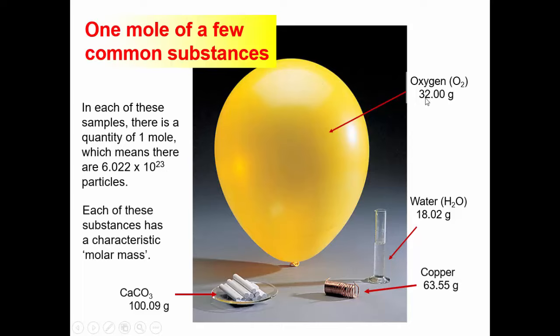But as you can see, there's also masses now associated with these molar quantities. One mole of oxygen weighs 32 grams. One mole of water has a mass of 18.02 grams. You see here, interchangeably using weight and mass, which isn't really the best idea. As a scientist, I wish I could be more perfect and always say mass when I mean mass, not say weight when I mean mass. So each of these substances has a characteristic molar mass.